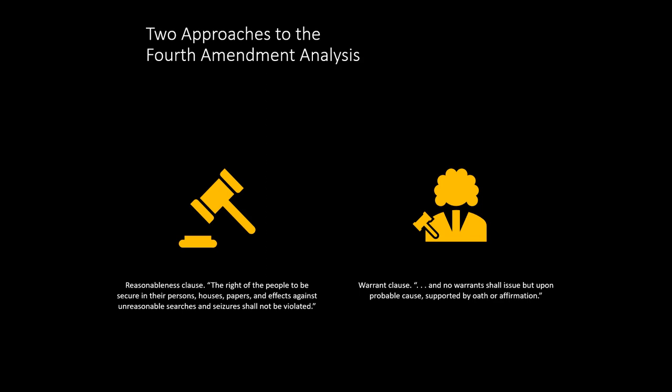Let's look at the fundamental analysis. We have the reasonableness clause and the warrant clause — two approaches. The reasonableness clause from the Fourth Amendment states: the right of the people to be secure in their persons, their houses, their papers, and effects against unreasonable searches and seizures shall not be violated. And no warrant shall be issued but upon probable cause, supported by oath or affirmation.